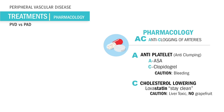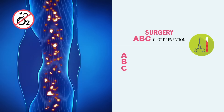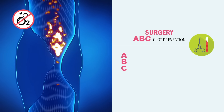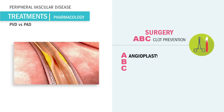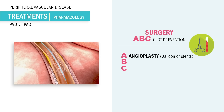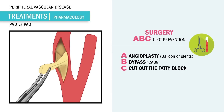If AC anti-clogging drugs aren't doing the full job, we can do the ABCs of surgery to prevent a big clot. A is for angioplasty, where a balloon or stent pushes aside plaque to get more oxygen to the muscle. B is for bypass, to go around the plaque-filled arteries. And C is to cut out the fatty blockage, called an endarterectomy.